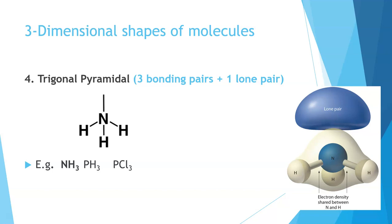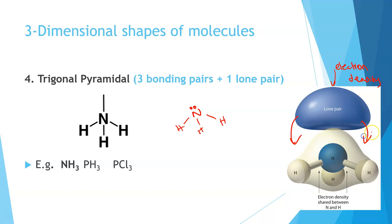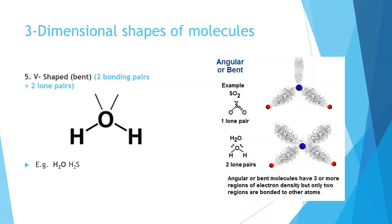Trigonal pyramidal is the first shape where we see the influence of lone pairs on our molecule. We see this with ammonia, where we have a non-bonding pair on top and three bonding pairs below. The non-bonding pair has a much greater repulsive effect, pushing the bonds downward away from linear. When we have three bonding pairs and one non-bonding pair on the central atom, the shape is always trigonal pyramidal — a triangular-based pyramid.